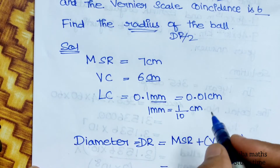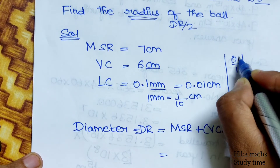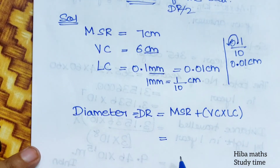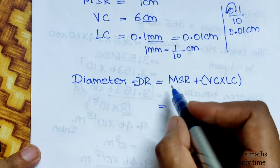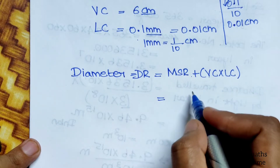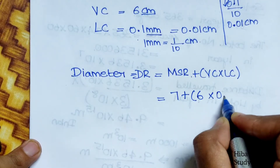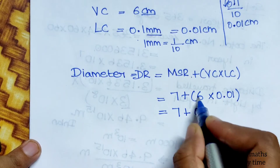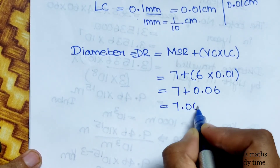So 0.01 divided by 10 is equal to 0.01 cm. Therefore the least count LC is 0.01 cm.